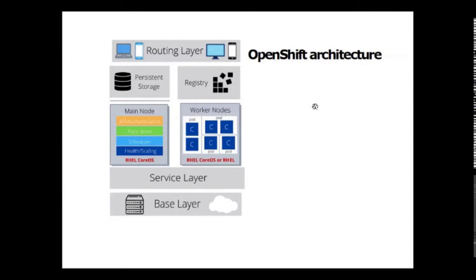The OpenShift architecture is similar to the Kubernetes architecture. You have a base infrastructure layer where you can host applications on physical servers, virtual servers, or public and private clouds. On top is the service layer, which is responsible for defining pods and access policies, providing a permanent IP address and hostname to the pods.